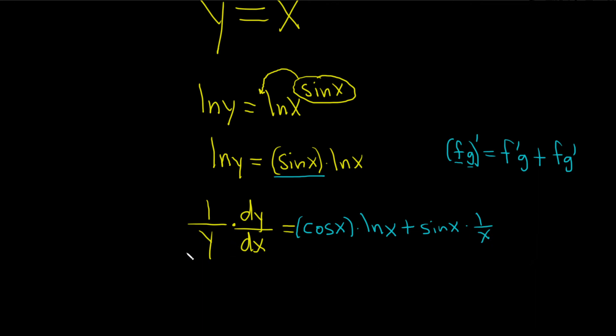So now we'll multiply by y. I'm out of room here, so I'm just going to do it and not show the steps. So dy dx is equal to y times cosine of x times ln x plus sine x over x. And we could stop here.